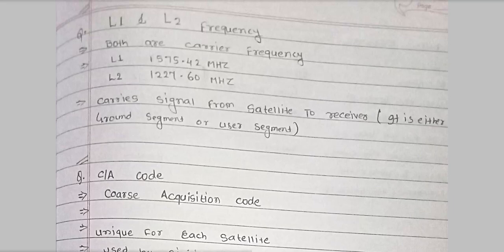In this video we are going to talk about what is L1 and L2 frequency. Both L1 and L2 are carrier frequencies. L1 frequency is 1575.42 MHz and L2 is 1227.60 MHz. The purpose of this carrier frequency is to carry the signals from satellite to receiver. The receiver may be a ground segment or user segment.